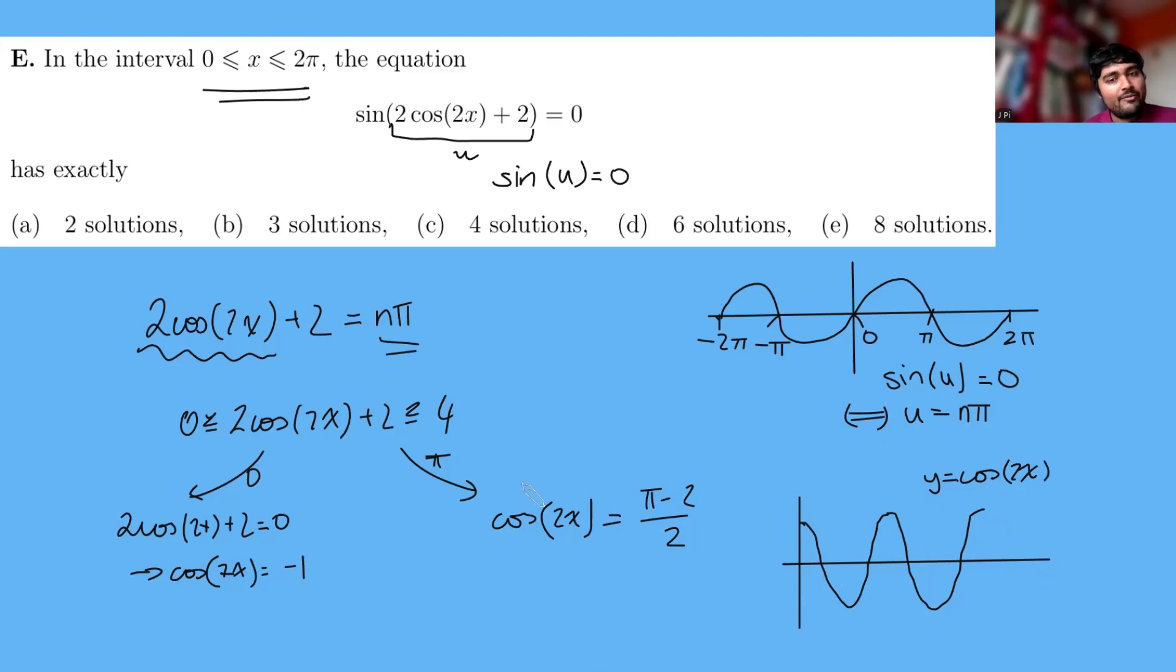Cool. Well, what values is it allowed to take? It could be minus 1, which is right at the bottom here. And so we have two solutions, one there and one there. Or it could be pi minus 2 over 2. Now pi is roughly 3.14. Take away 2 from that is roughly 1.14. Divide that by 2 is roughly 0.55. So let's mark on that there.